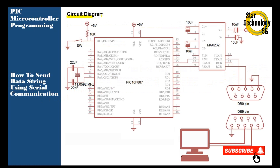Circuit diagram: It is the same circuit diagram we already used in the last project. It is a PIC16F887 — pin number 1 is the master reset, pin number 13 and 14 interface with the crystal, and we are using 22 pF capacitors. The crystal frequency is 11.0592 MHz. Pins RC6 and RC7 interface with the MAX232, and the output of the MAX232 interfaces with the DB9 pin connector, which connects to the PC.